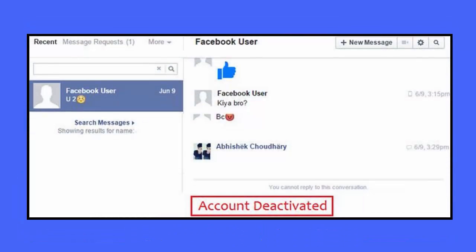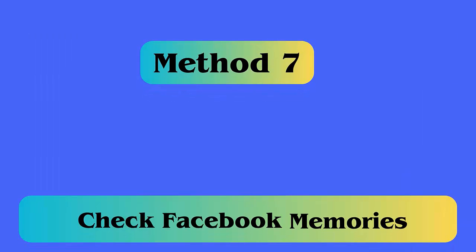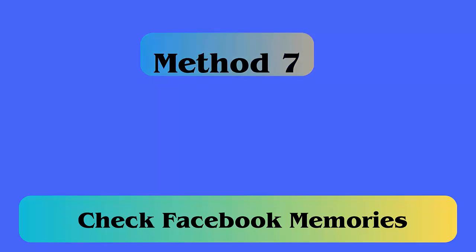Method 6: Check whether the user has deactivated their Facebook account. Follow the steps — first, open the Facebook app and search for the person you are looking for. If you fail to find them, try to find that person from a friend's account. If you cannot find them from another account either, it simply means the user has deleted their account or Facebook has banned the account.